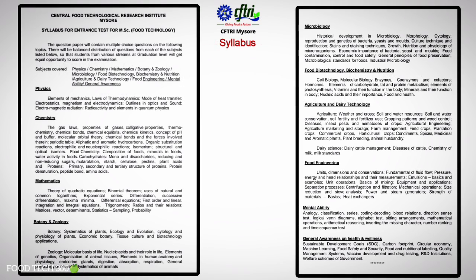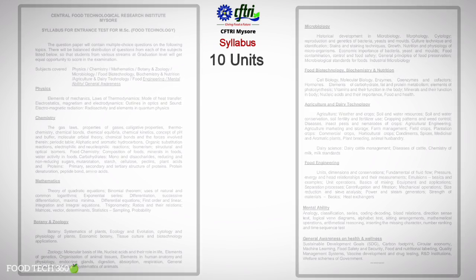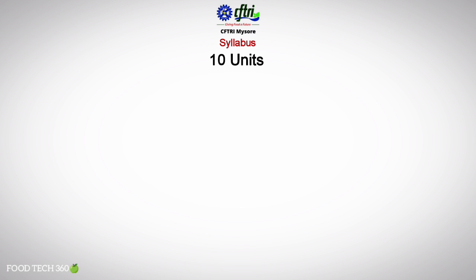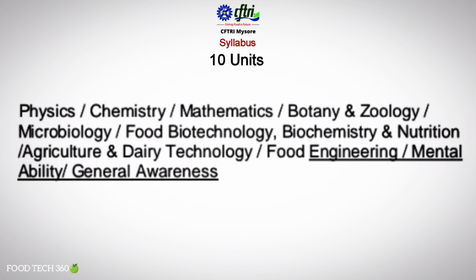The syllabus for the CFTRI entrance exam consists of 10 units: Physics, Chemistry, Mathematics, Botany, Zoology, Microbiology, Food Biotechnology, Biochemistry and Nutrition, Agriculture and Dairy Technology, Food Engineering, Mental Ability, and General Awareness on Health and Wellness.